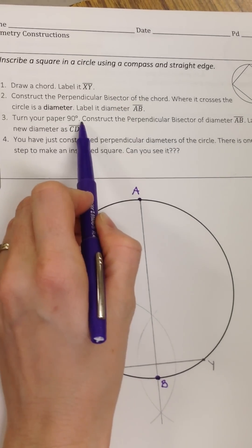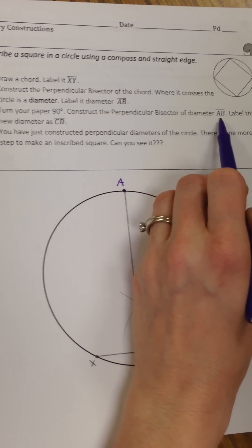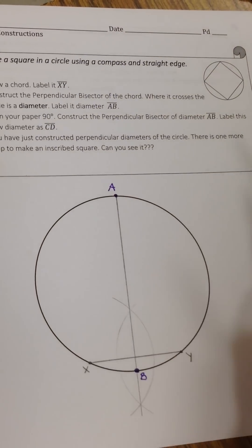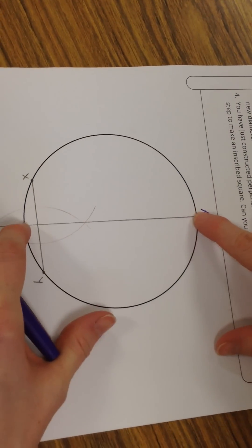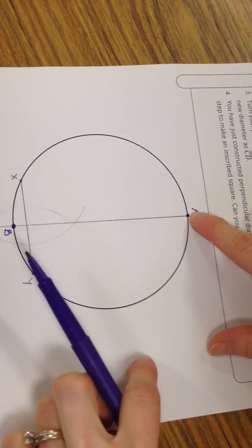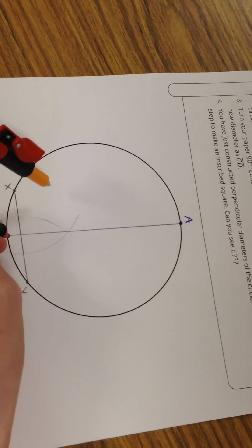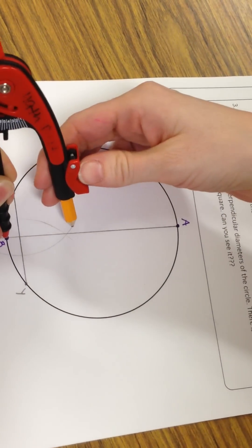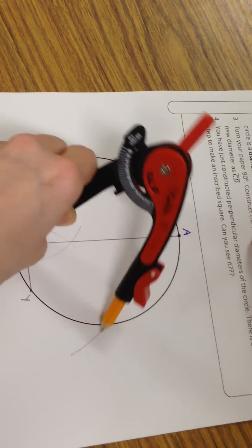Third step: turn your paper 90 degrees and we're going to construct the perpendicular bisector of diameter AB. So we're going to turn the paper around and now we're going to take this diameter and do the fish going this way. Put your compass point on A or B, it doesn't matter which one. Open it up more than halfway. Make a big sweeping arc.